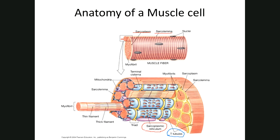That arrangement — a T-tubule with its two associated sarcoplasmic reticula — is called a triad: sarcoplasmic reticulum, T-tubule, sarcoplasmic reticulum. That three-part structure is called a triad.